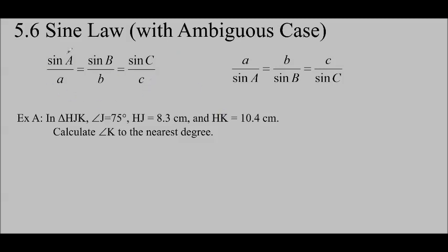So the sine law is sine A over a equals sine B over b equals sine C over c, or a over sine A equals b over sine B equals c over sine C. We'd use this version if we're looking for the angle, and we'd use this version if we were looking for the side.